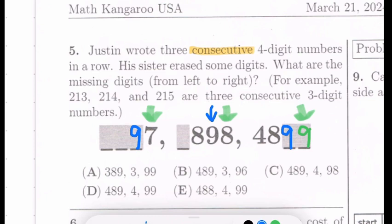We have one complete number over here, so all we have to do is count backwards. 4899, 4898, and 4897. Let's look for the answer choice that has these digits: we need 489, 4, and 99. The answer choice that has these is D. So the answer for question number 5 is D.